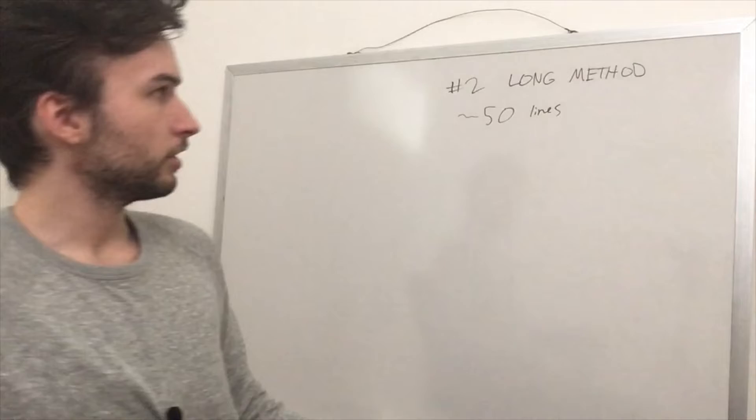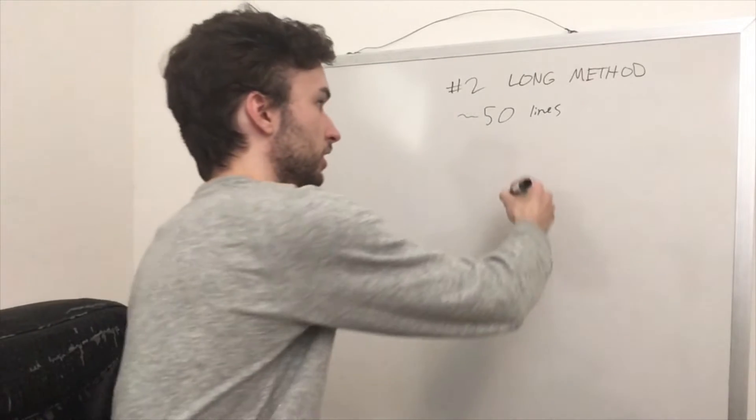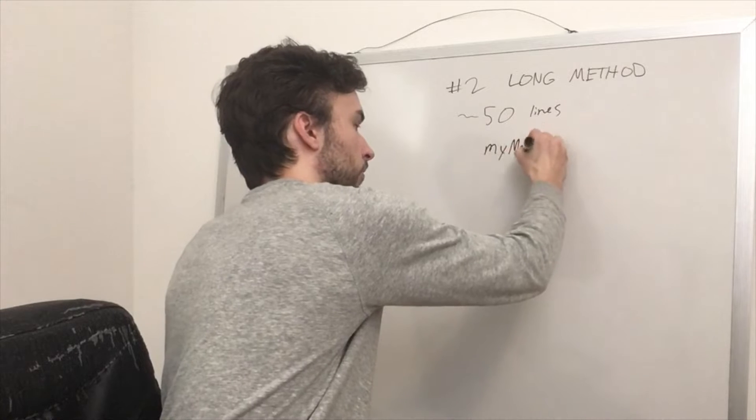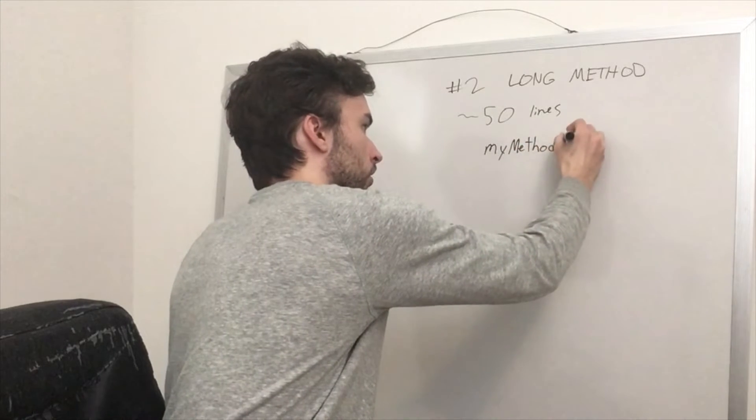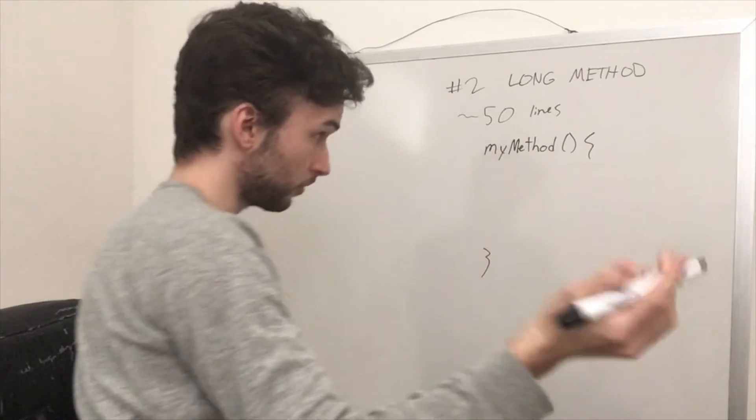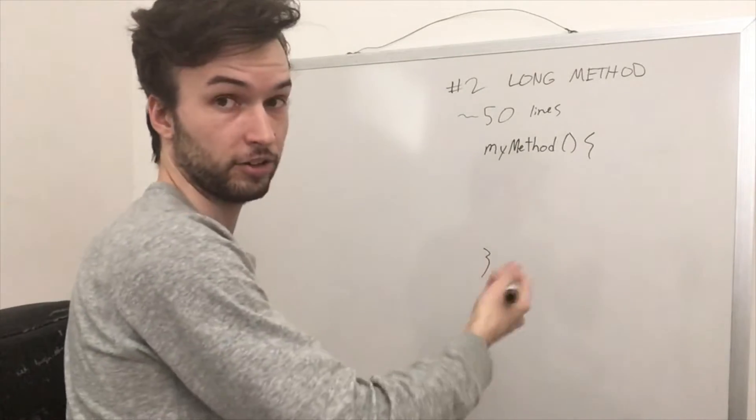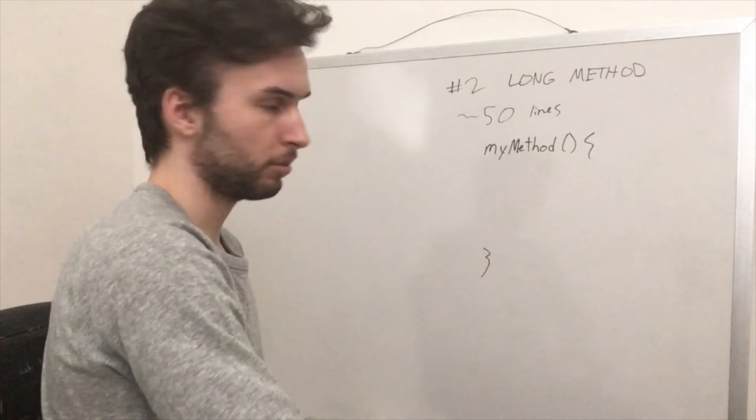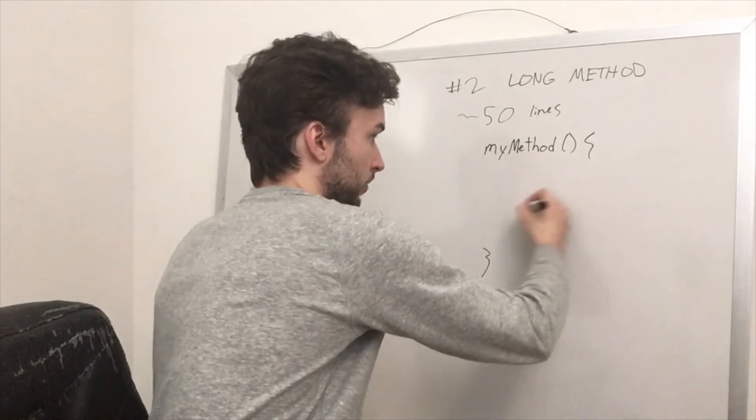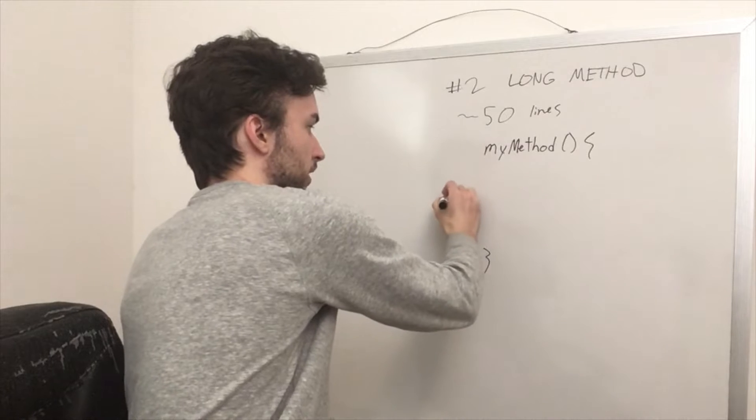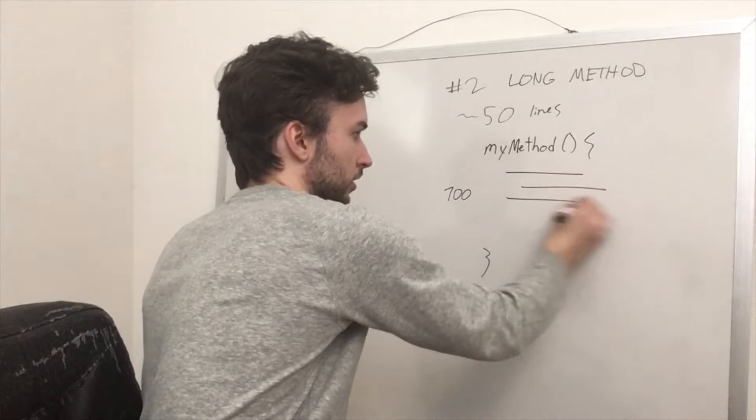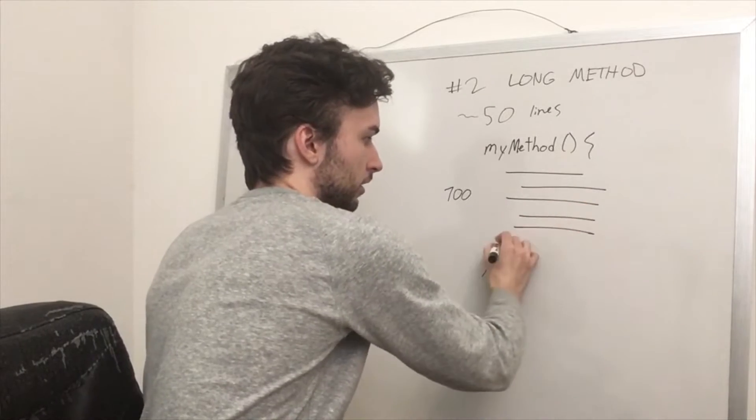And so if you have a function over here, let's say you have like my method. And that guy, let's say that this is around like 500. Maybe we'll make it a different number. Let's say it's like 700 lines of code. So this one's going to be 700. And we'll just kind of abstract it, put some lines in here.